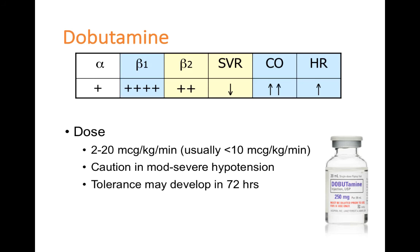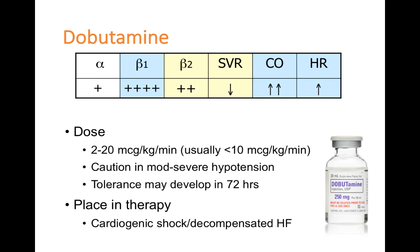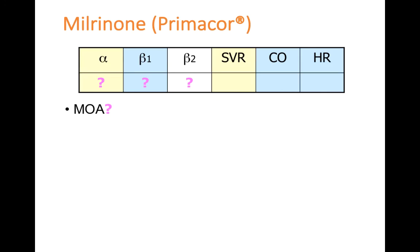Dobutamine's place in therapy is primarily for patients with cardiogenic shock or decompensated heart failure, as it is very good at supporting increased cardiac output and heart rate, and can help reduce the afterload that is detrimental in patients with decompensated heart failure.